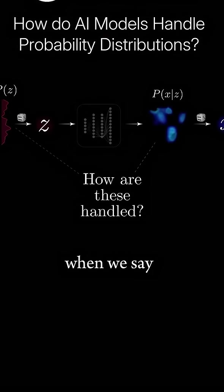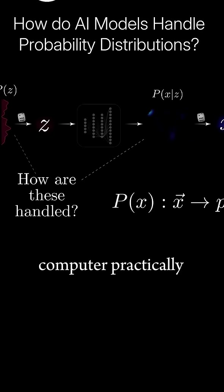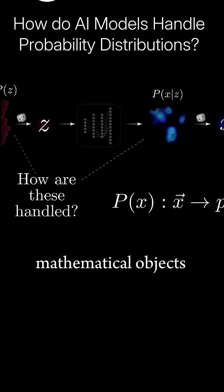What do we actually mean when we say things like a model gives us a distribution? How does a computer practically represent these infinite mathematical objects?